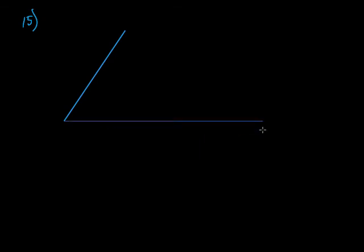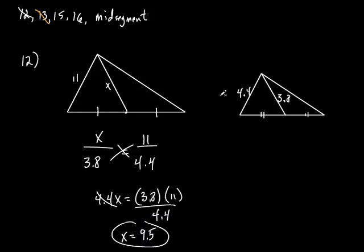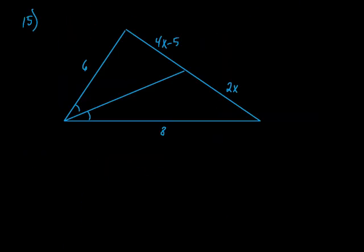Let's do problem 15. They give you one big triangle, and it says AX bisects angle BAC. So they tell you this angle and this angle are equal to each other. The values are: this side is 6, this side is 8, this is 2x, and this is 4x minus 5. We're comparing segments in one big triangle — it's a little different from two separate triangles, but the ratios and proportions are all the same. This is an angle bisector.